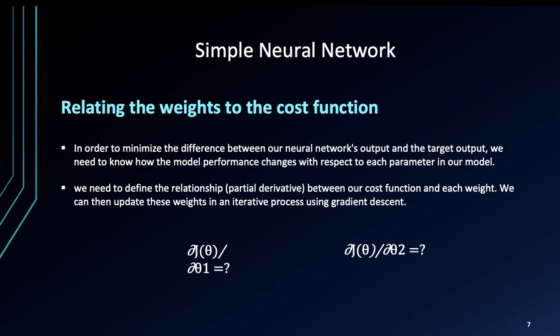We need to derive the relationship between our cost function and each weight, and then we update these weights in an iterative process using gradient descent. Again, gradient descent is something we have touched upon.